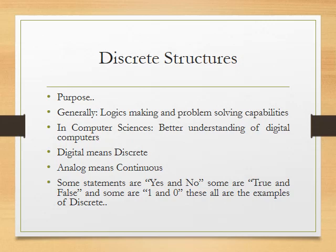We have the logic that we create — whether a problem can be solved or not. All the things that we will learn in Computer Science — for Computer Science students, this discrete structures course is very important. It gives a better understanding of the digital computer. Digital means discrete, and analog means continuous.